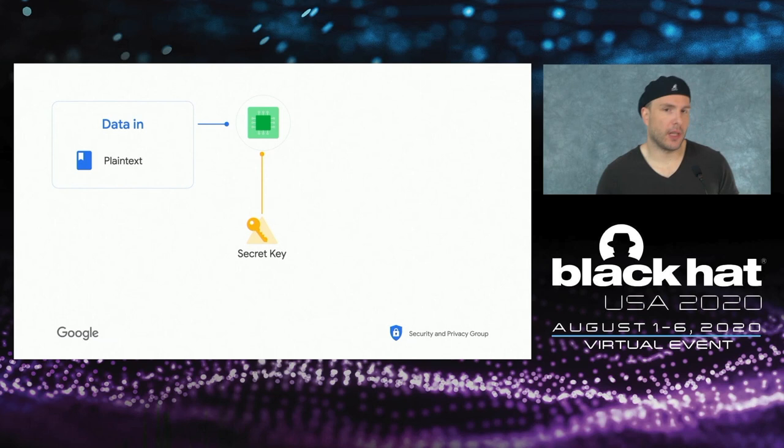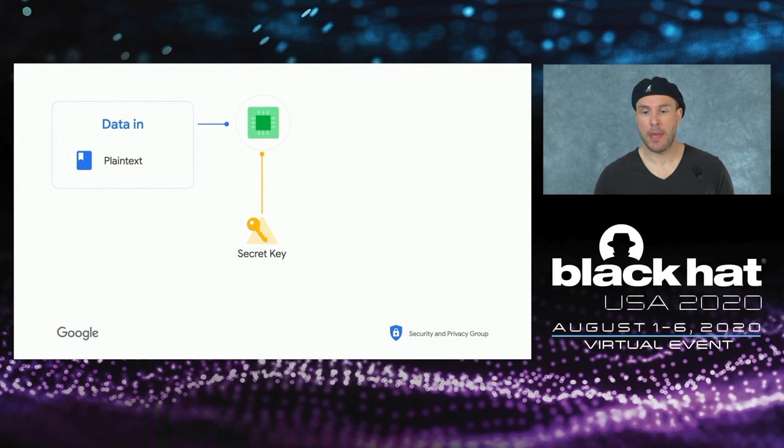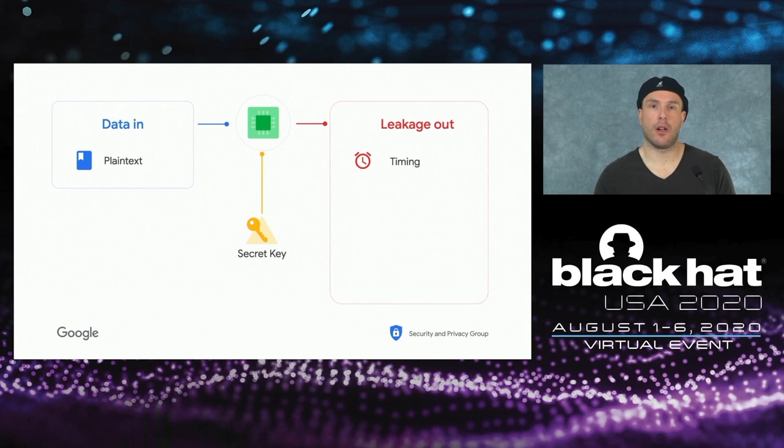In the case of hardware crypto, when you perform a computation on a CPU using an algorithm, you feed in your plaintext and your secret key. As a result, you get the encrypted text, but you also get a bunch of leakage — unintended side effects which are due to the algorithm running on your target.